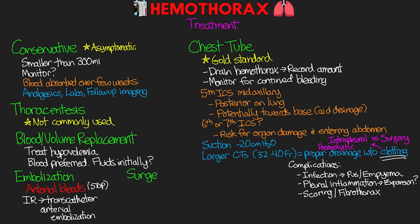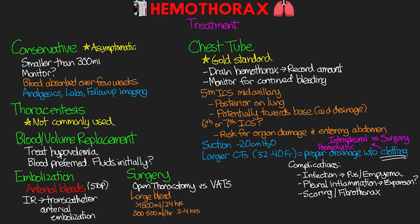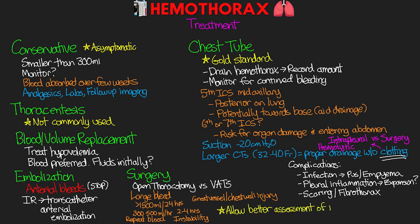In a significant number of traumatic hemothoraxes, surgery is often required. This can be an open thoracotomy or video-assisted thoracic surgery — a VATS. Indications include large volume bleeds of more than 1500 mLs in 24 hours, 300 to 500 mLs per hour for two to four hours post chest tube placement, repeated blood transfusions, hemodynamic instability, or great vessel and chest wall injuries. Thoracotomy allows better assessment of the injury and bleed, and better control of that bleeding. Blood is evacuated and a chest tube placed post-surgery. For clotted hemothoraxes, surgery may be necessary for clot evacuation and potentially decortication of the empyema.